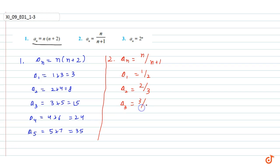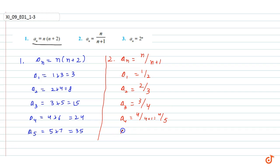Continuing, a_4 = 4/(4+1) = 4/5, and a_5 = 5/(5+1) = 5/6. Now we will do the third question.